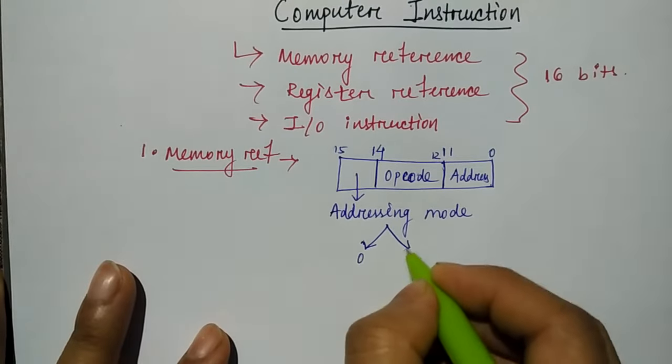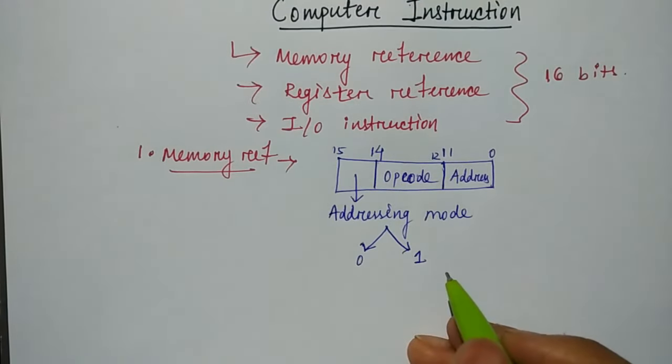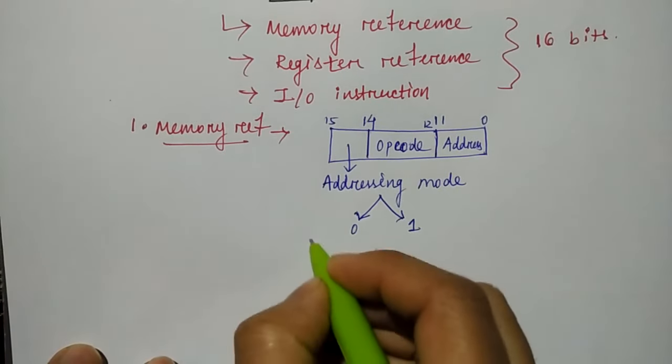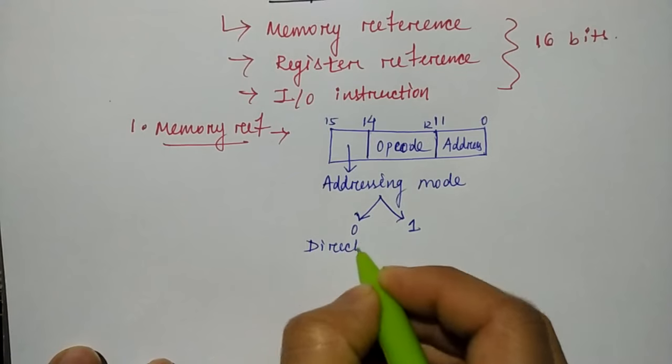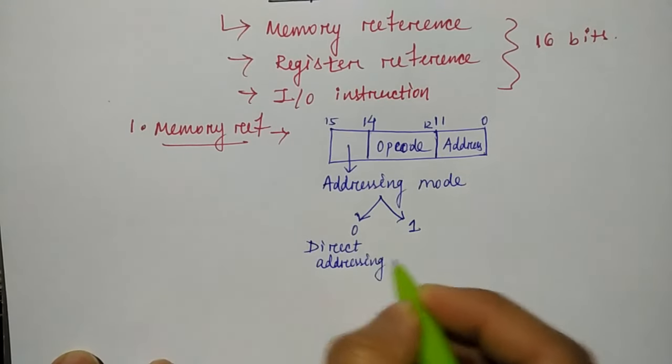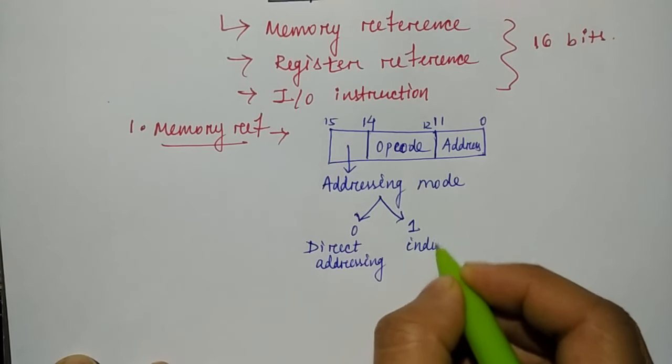One is for 0, one is 1. So in addressing mode, if you have 0th value present, that is for direct addressing. And if you have 1 present in addressing mode, that is for indirect addressing.